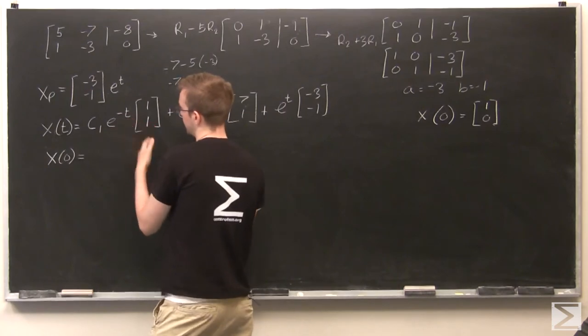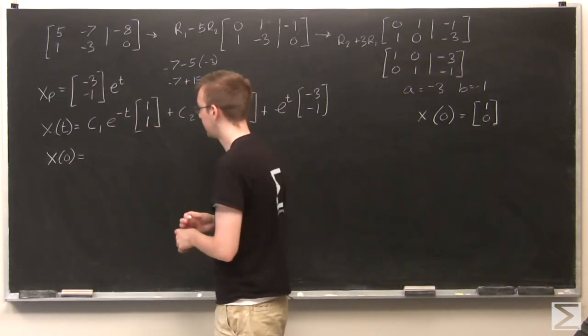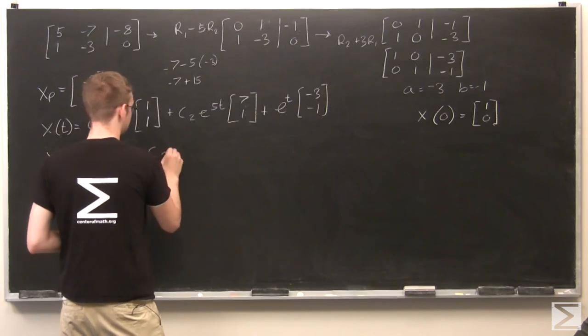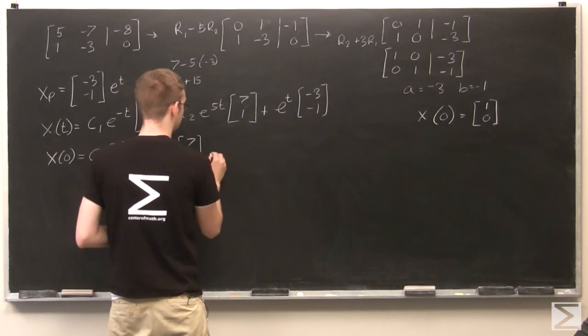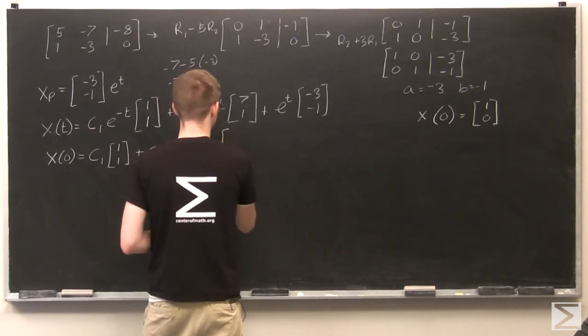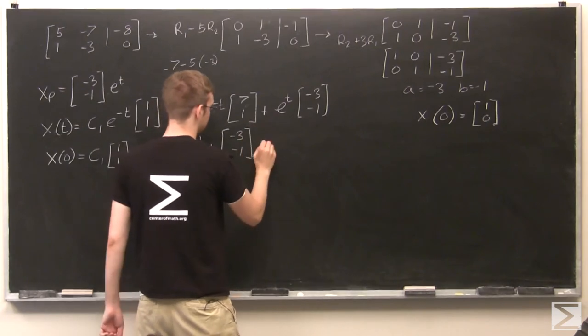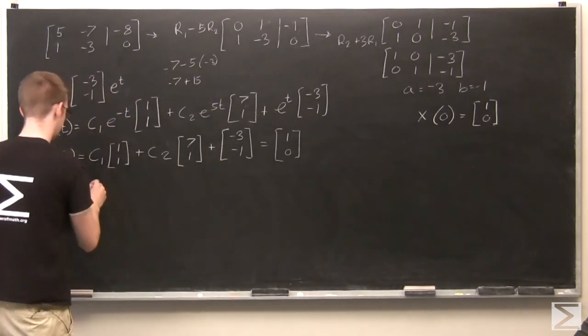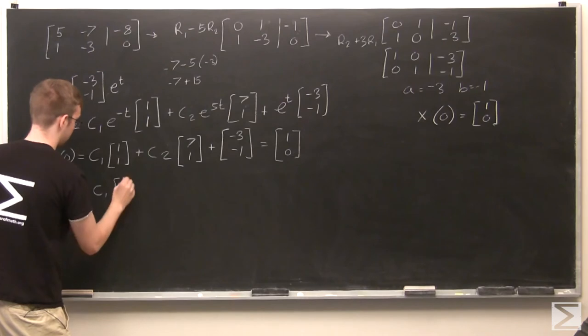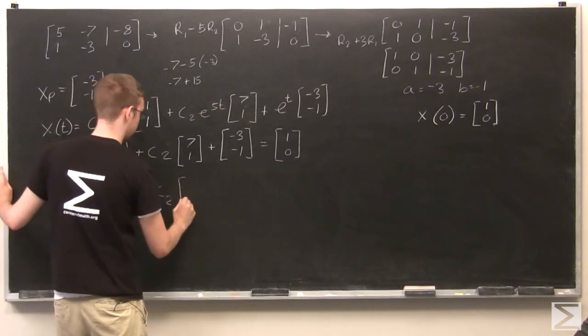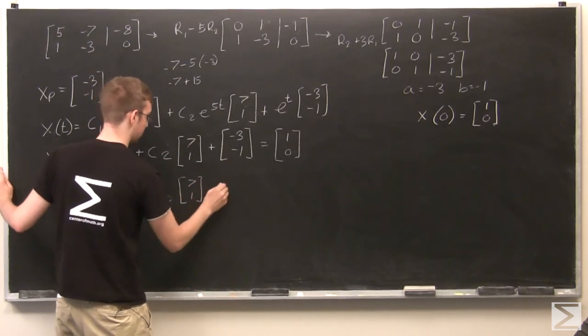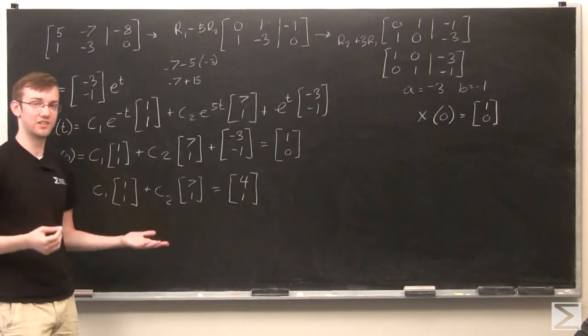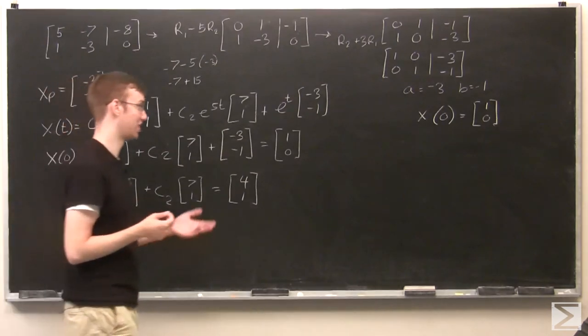So x(0). If t is 0, whenever you have e^0, that's equal to 1. So I have C1*[1, 1] plus C2*[7, 1] plus [-3, -1] is equal to [1, 0]. I want to add that vector to that side. So now we have C1*[1, 1] + C2*[7, 1] is equal to [4, 1], right? And here we have yet another system of linear equations.